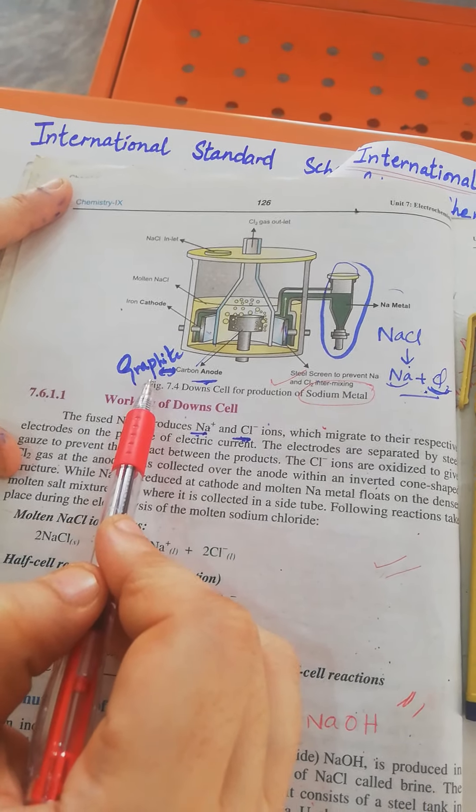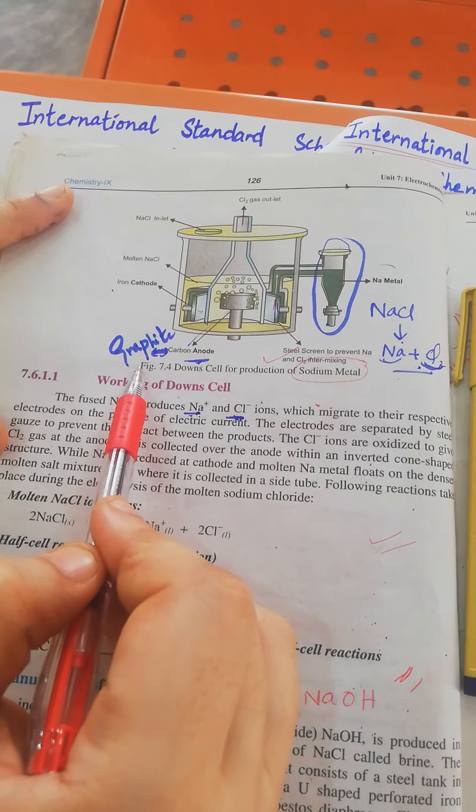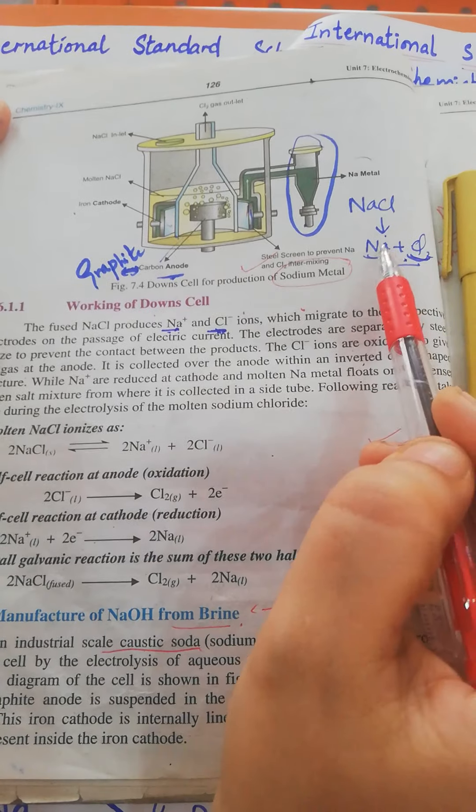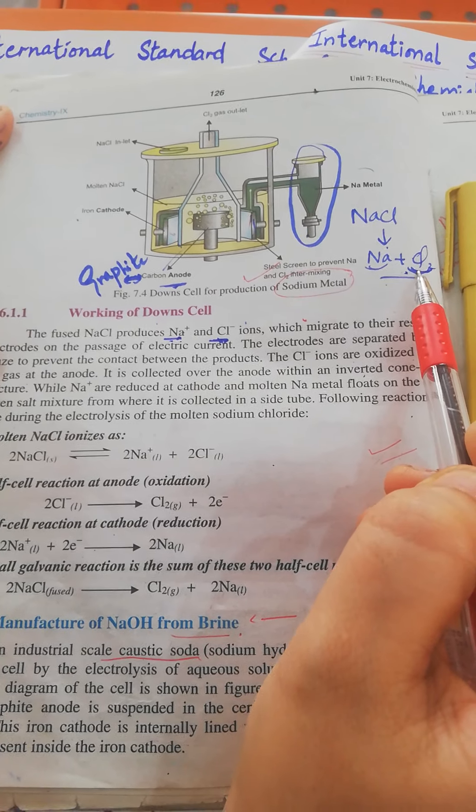In this whole process, when sodium chloride undergoes electrolysis, sodium metal is produced along with chlorine gas as products.